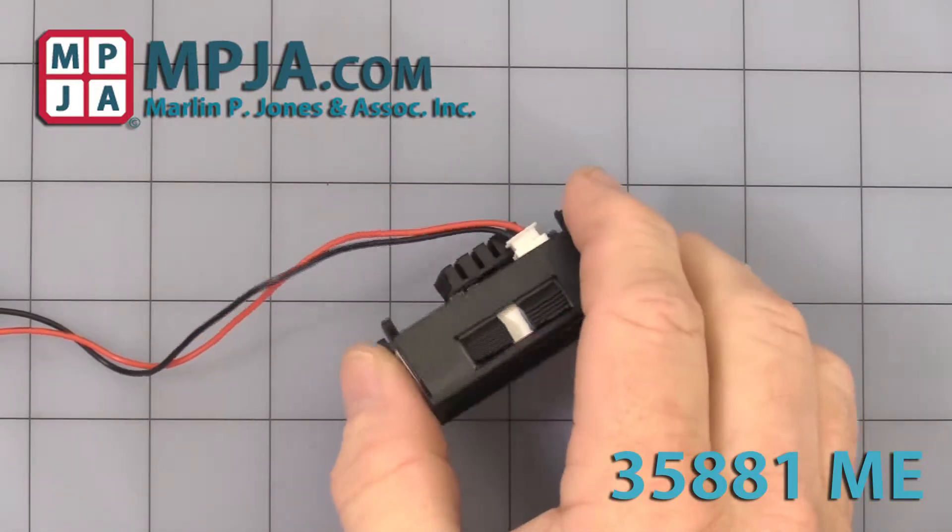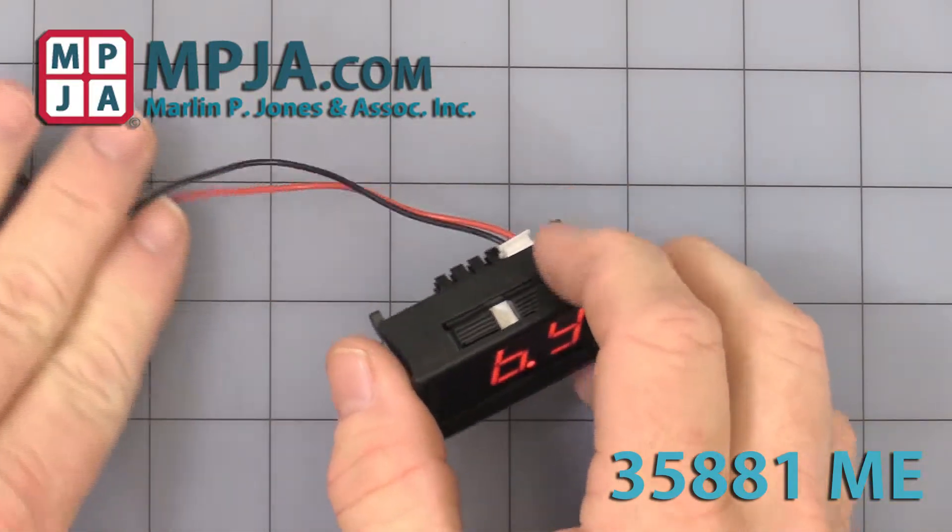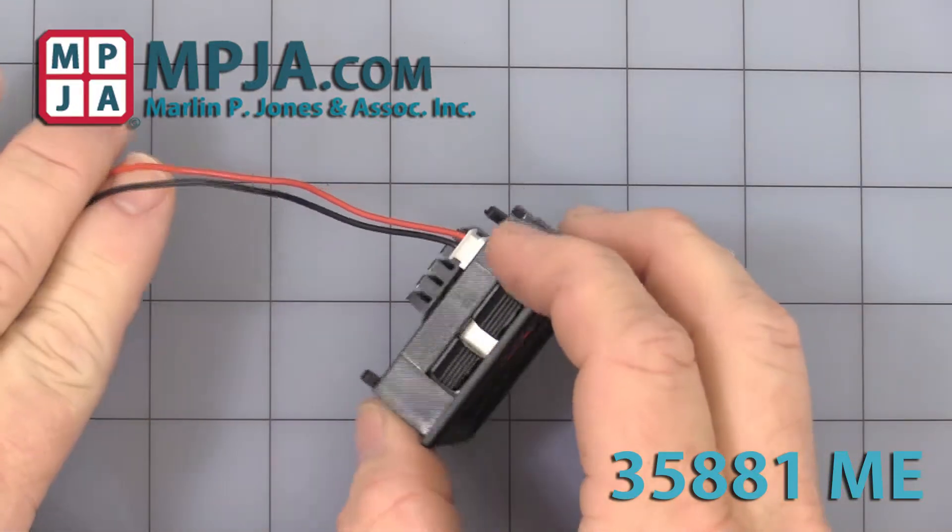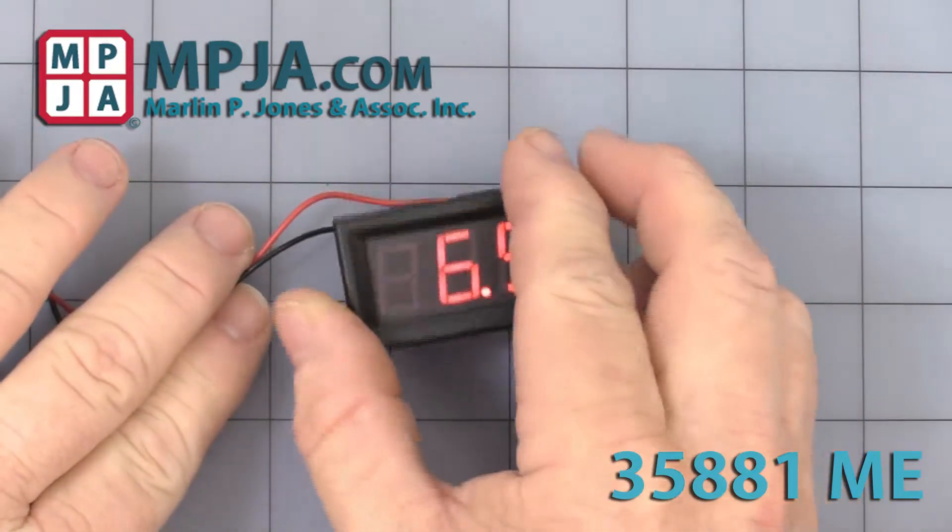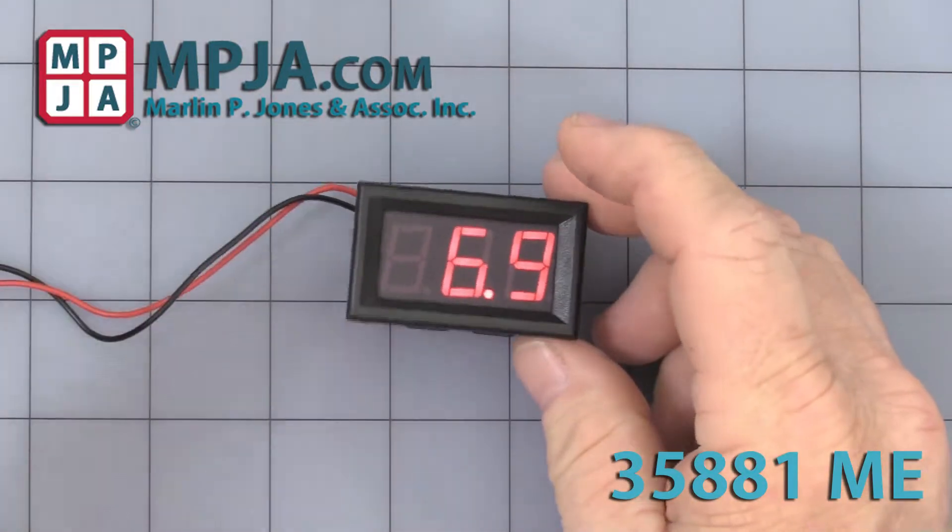First and most important, we've had a lot of people looking for just a simple two-wire operation. It does monitor its own power source, so red's plus, black's ground. It's simple as that, no other voltage needed to power the meter.